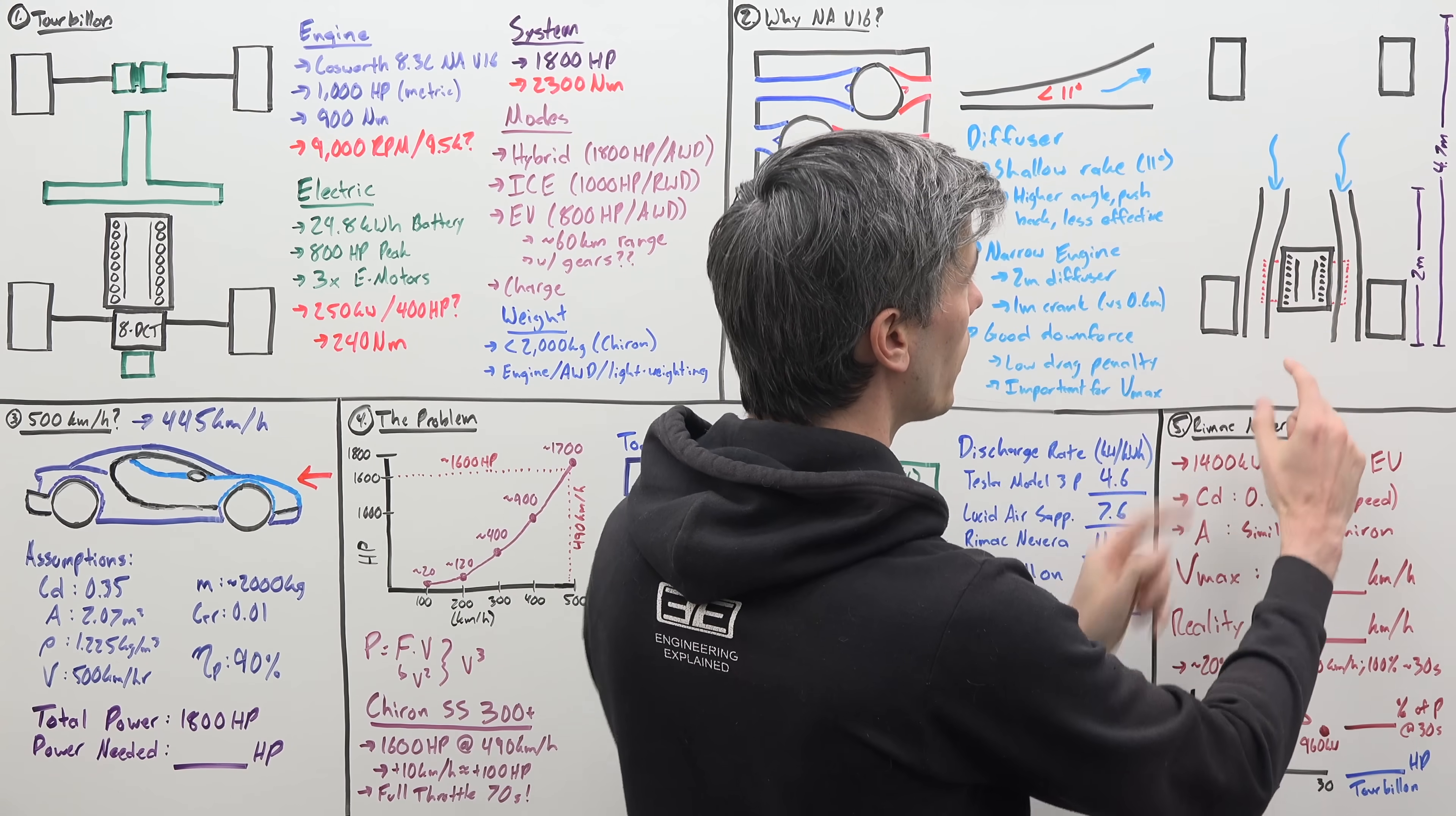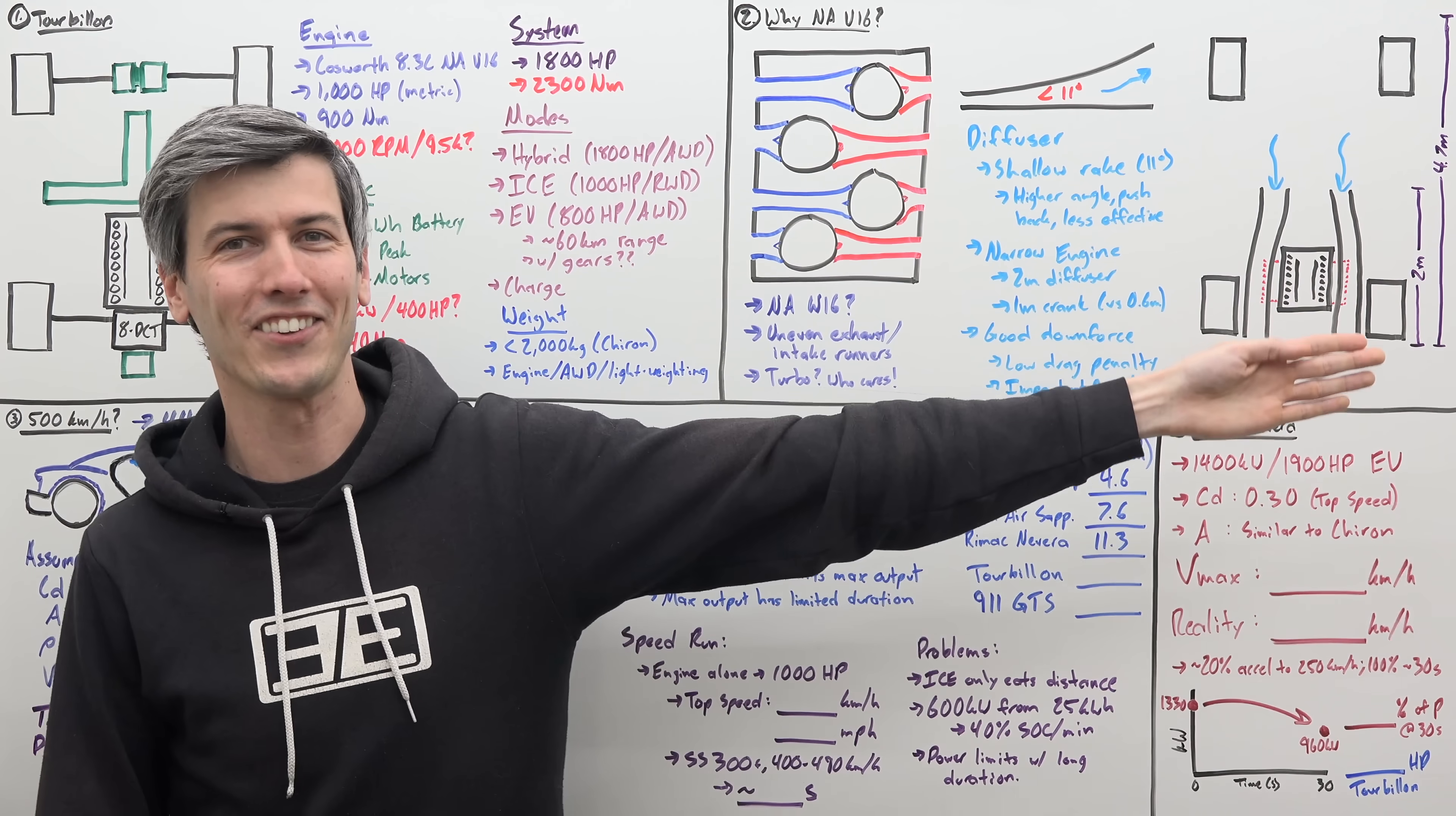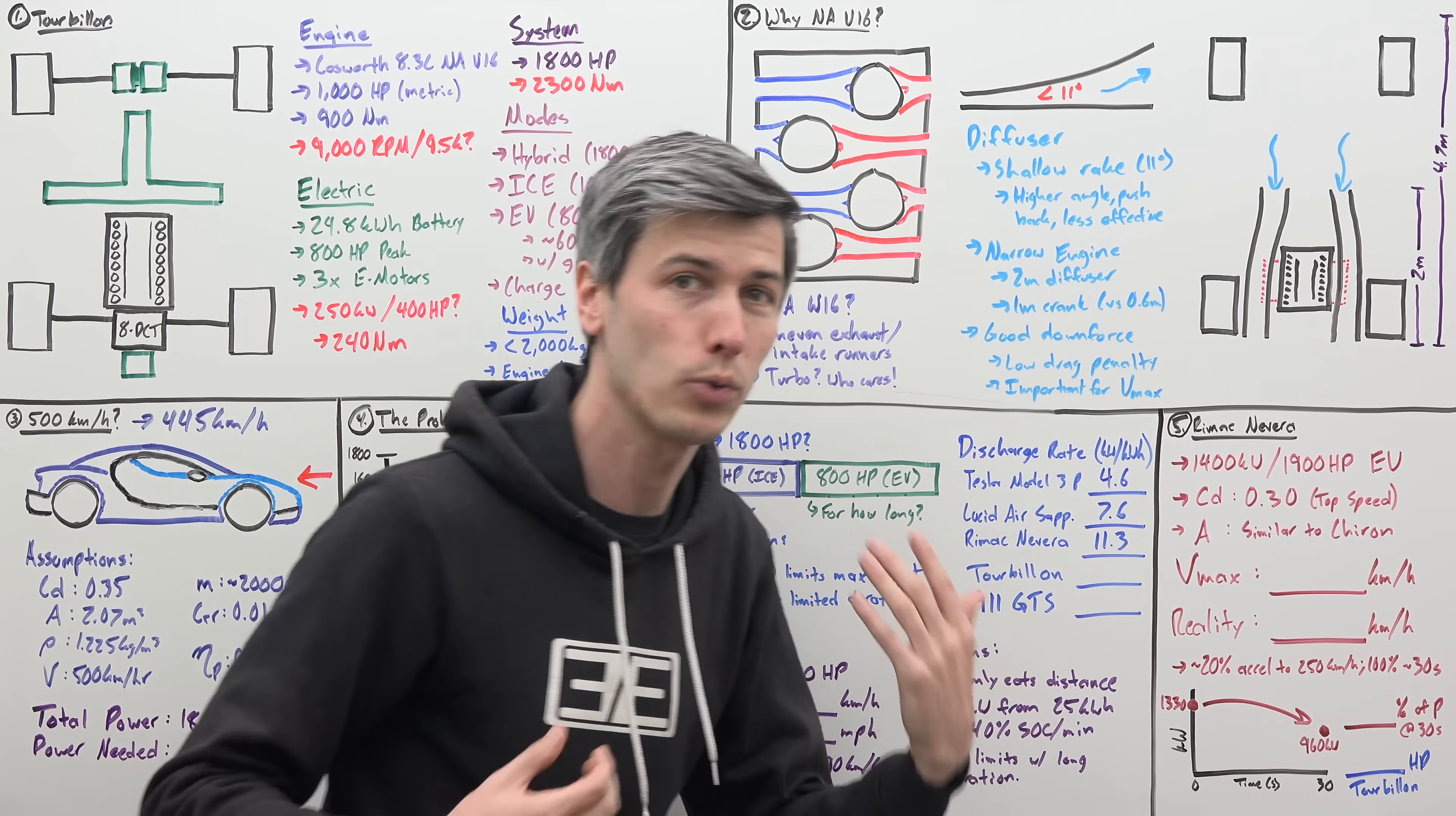So by using that narrower engine, they're able to have that really long diffuser, and also have it go around the engine, and they even have the engine at a bit of an angle to take advantage of the space underneath it. So keep in mind, this new engine has about a meter long crankshaft. That, for scale, is about the center of my nose to the edge of my finger, just slightly longer than that. I mean, it is a massive crankshaft, absolutely enormous. And so the good news with using a big diffuser is that you can get a good amount of downforce without a high drag penalty.